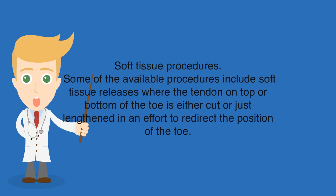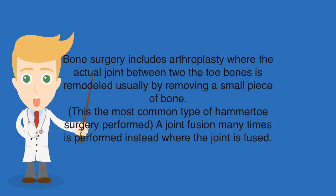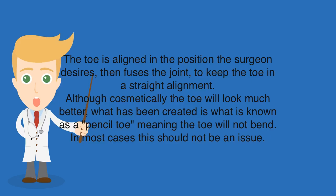Available procedures include soft tissue releases where the tendon on the top or bottom of the toe is either cut or lengthened in an effort to redirect the position of the toe. This may also include a capsulotomy, where the ligament that attaches one bone to the next is partially incised, again to redirect the toe. In general, these procedures alone will not adequately reposition a toe and more work, particularly bone work, will need to be done. Bone surgery includes arthroplasty, where the actual joint between two toe bones is remodeled by removing a small piece of bone. A joint fusion is also often performed, where the toe is aligned in the desired position and the joint is fused to keep the toe in straight alignment. Although cosmetically the toe will look much better, what is created is known as a pencil toe, meaning the toe will not bend.